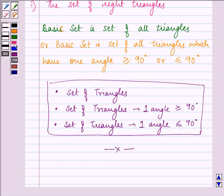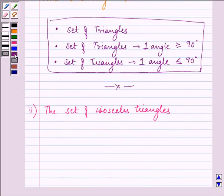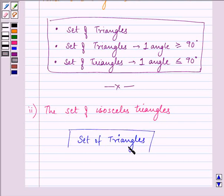Proceeding on with the second part. Now here we have the set of isosceles triangles. The basic set of the given set is the set of all triangles and this set contains isosceles triangles also. So clearly our answer can be set of triangles that is the universal set from which this set can be taken out.